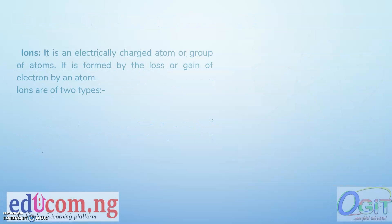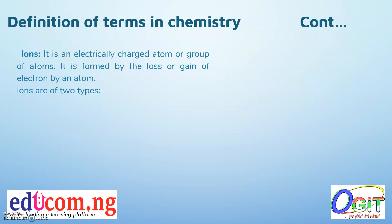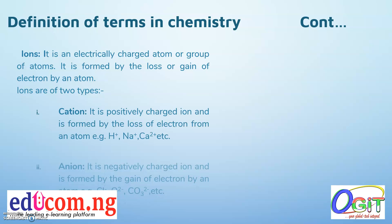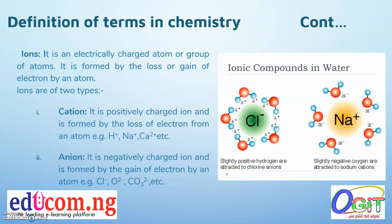An ion is an electrically charged atom or group of atoms that is formed by the loss or gain of electrons by an atom. There are two types of ions: the cation and the anion. The cation is a positively charged ion and is formed by the loss of electrons from an atom.